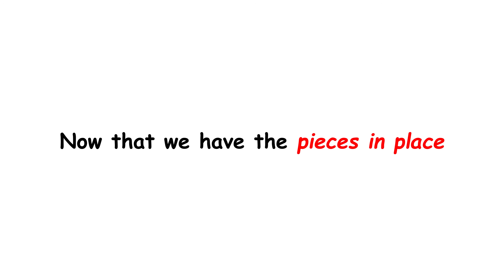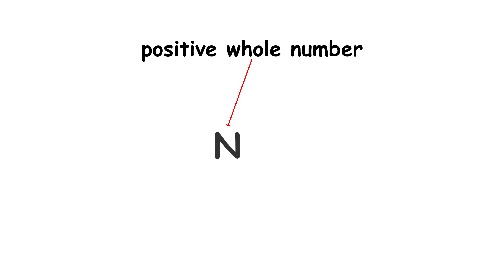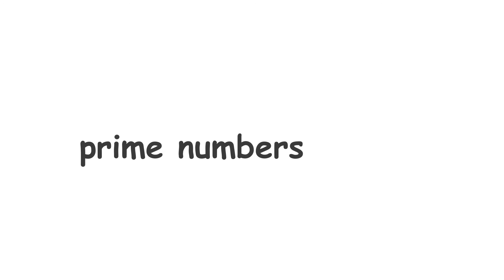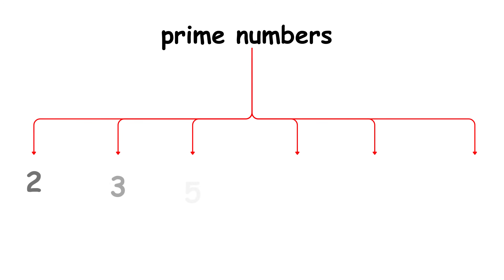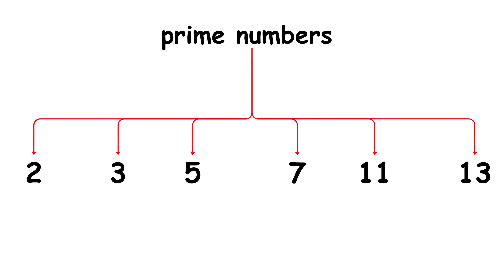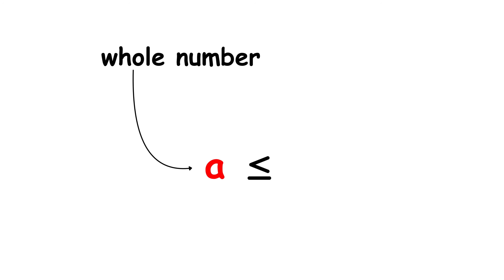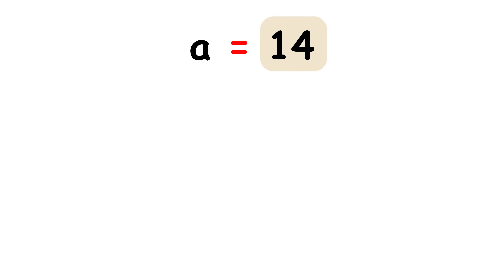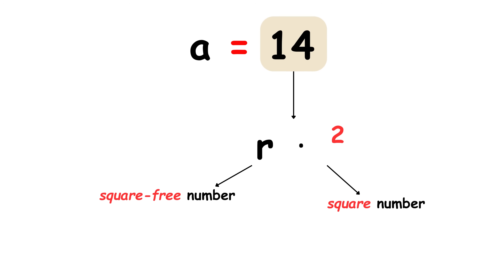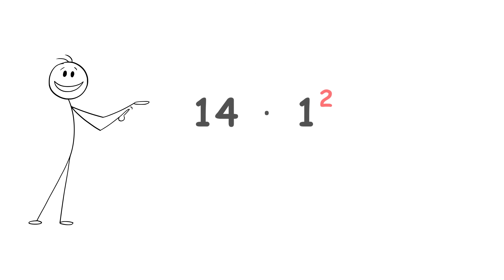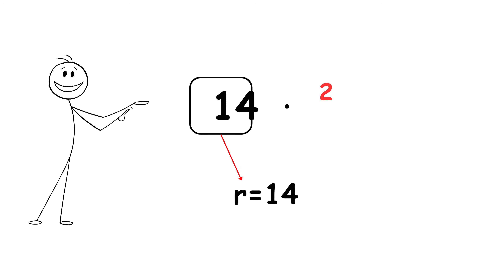Now that we have the pieces in place, it's time to pick a positive whole number, which will be called N. Let's choose N equals 16, for example. How many prime numbers are less than or equal to 16? The answer is 6, and we'll call that number K. Specifically, the prime numbers are 2, 3, 5, 7, 11, and 13. Next, consider a whole number called A, which is less than or equal to our chosen number N. For example, A equals 14. This number can be expressed in the form of R times S squared — that is, a square-free number times a square number. In this case, that's 14 times 1 squared. So R equals 14 and S equals 1.